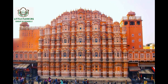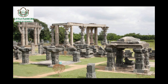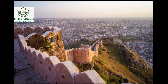Number three: it is in Gwalior. The answer is Gwalior Fort. Number four: it is in Jaipur. The answer is Hawa Mahal. Hawa Mahal has 953 windows on the outside of the wall. Number five: it is in Andhra Pradesh. The answer is Warangal Fort.